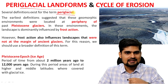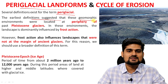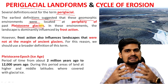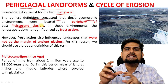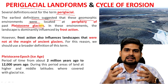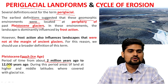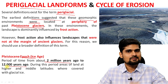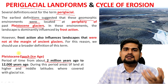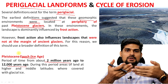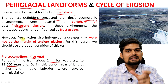The earliest definitions suggested that these geomorphic environments were located at the periphery of the Pleistocene glaciers. Many scientists say that these are only those areas which are in the periphery of the Pleistocene glaciation. The Pleistocene glaciated areas are those which were completely frozen during the ice age — in the Pleistocene epoch, that is about 2 million years to about 12,000 years ago. After that, all this ice started to melt. During this particular glacial time period, most of the land areas in the northern hemisphere were under ice. This is when the periglacial concept comes into the picture — those areas beyond the glacial zones of Pleistocene glaciation are part of these periglacial areas.